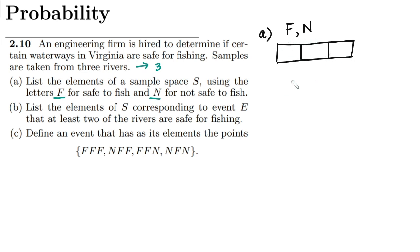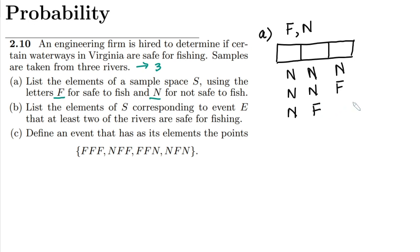So what can the options be? The first combination is N, N, N — not safe, not safe, not safe. The second is N, N, F. Then N, F, N. And then N, F, F — the three combinations where the leftmost position is fixed with not safe.